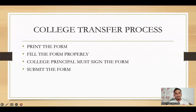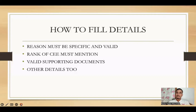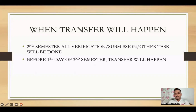College transfer process: print up the form, fill it up properly. The college principal must sign the form, then submit it. The reason must be specific and valid. Your rank of CWR must be mentioned. Valid supporting documents are very important. All other details must be filled out correctly. The transfer will happen in the second semester — all verification, submission, and other tasks will be done — and before the first day of the third semester, the transfer will happen. Branch allotment will happen within 14 days of third semester classes commencing.